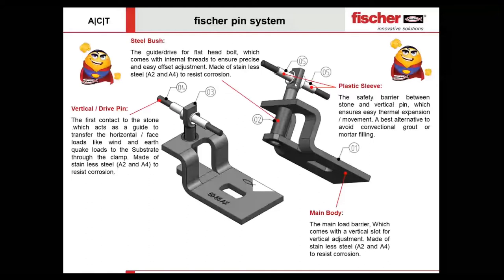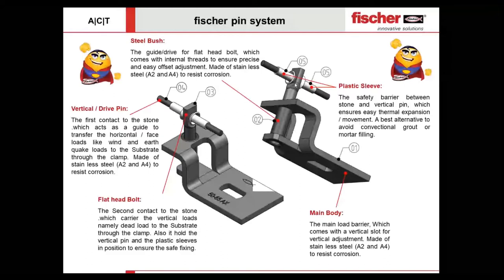The next element is the flat head bolt, which is the main load carrier for vertical loads — especially the dead load — transferring the complete loads directly to the main clamp, which then transfers to the substrate. This is the overall element assembly of the clamp.